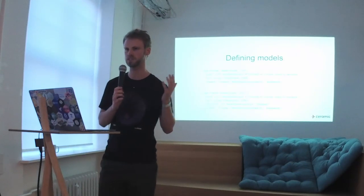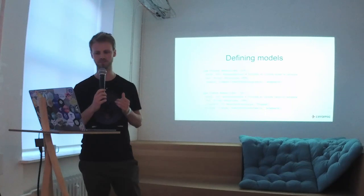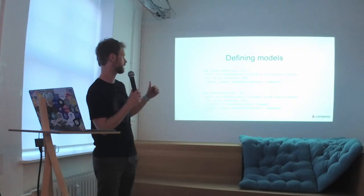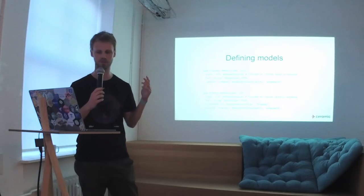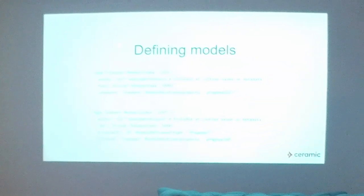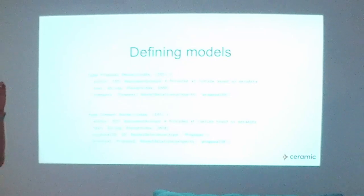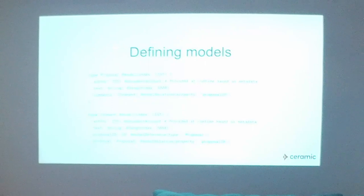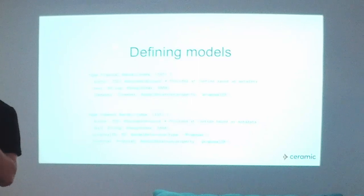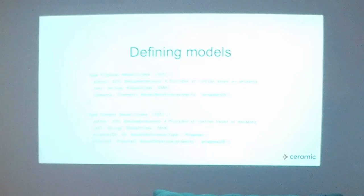Here's a quick example: you have a proposal with an author — provided automatically by the system — and some text. Then there's a reference to another data model, which is a comment. This is pretty much the same but has a proposal ID, which is a reference back to the original proposal. You can see how you can create two different data models that reference each other. And potentially someone could come in — if I build this application for DAO proposals, someone else could add a new data model that allows for liking proposals or more granular commenting.